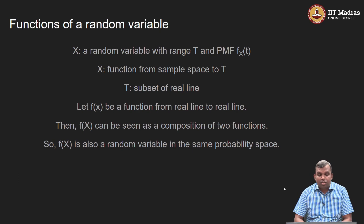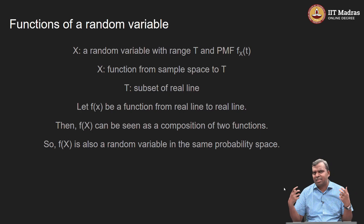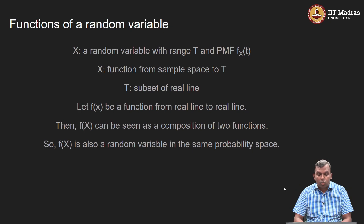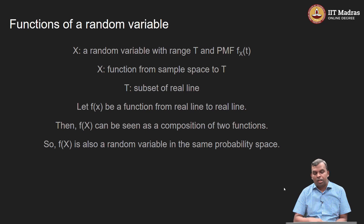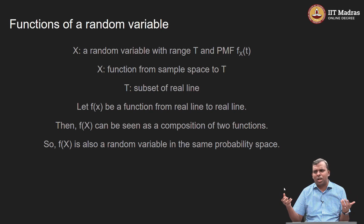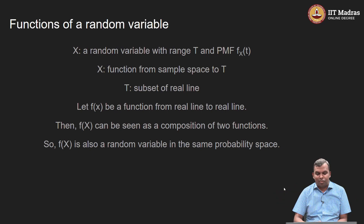So, functions of a random variable. We have a random variable X, which has a certain range and a certain PMF, and that is all I care about. Once I know that, I understand the random variable quite well. The random variable itself is a function from the sample space to its range T, and we take the range as a subset of the real line. Let us say f is some function from the real line to the real line — it could be x squared, absolute value of x, log x, or whatever function you want to think of.